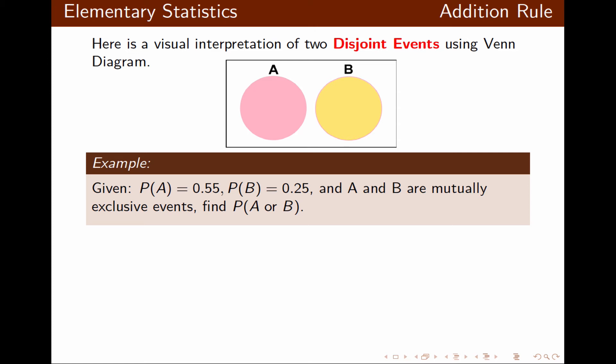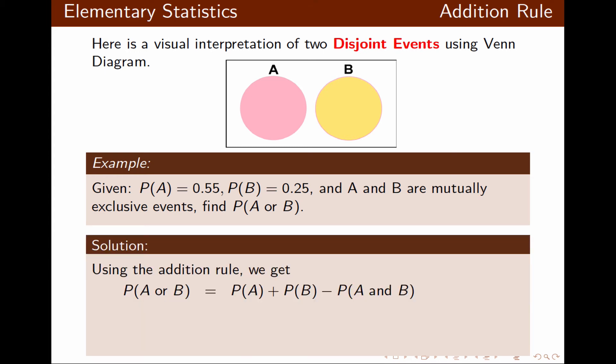In this example, probability of A is given, probability of B is given, and also we know that A and B are mutually exclusive events, and we want to find probability of A or B. Using the addition rule, we know probability of A and B is 0 because they are given to be mutually exclusive events. Applying the rest of the information, probability of A or B is 0.8.